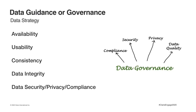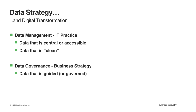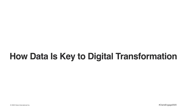The third area of data strategy is data guidance, covering availability, usability, consistency, and data integrity — you need data you can trust. These are based on internal data standards and policies. For example, in the security area, a finance VP would be the owner of the finance data and provide pertinent people access to it. You might also be under compliance laws such as GDPR or HIPAA, and that's part of data governance. A useful way to think about this: data management — being central, accessible, and clean — is an IT practice, while governance is a business strategy.